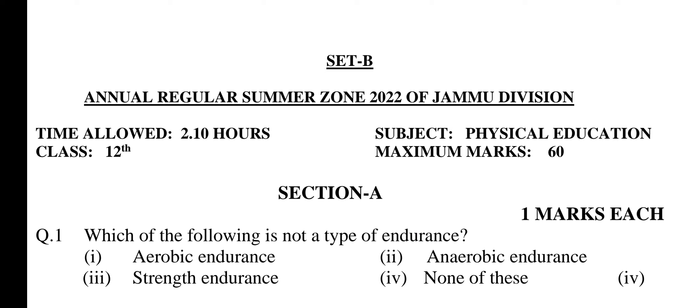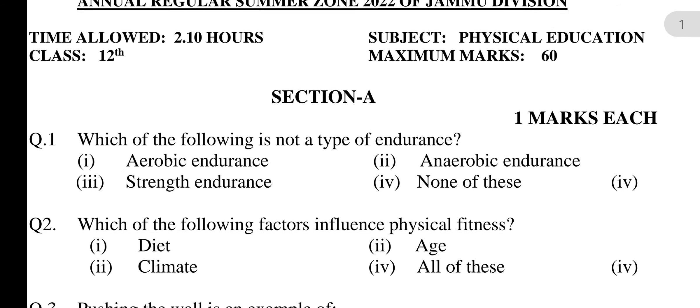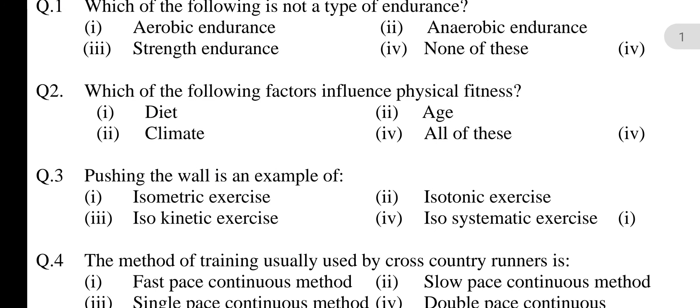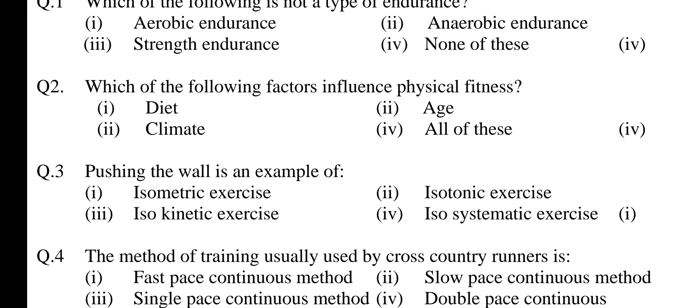Subject: Physical Education, Class 12th, Maximum Marks: 60. Section A — Multiple Choice Questions, one mark each. Question 1: Which of the following is not a type of endurance? Option 1: Aerobic endurance, 2: Anaerobic endurance, 3: Strength endurance, 4: None of these. Answer is option 4 — none of these.